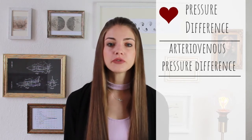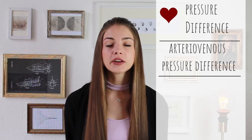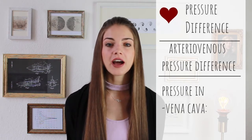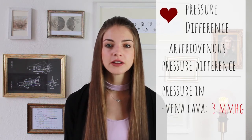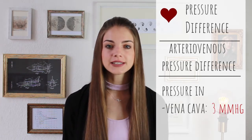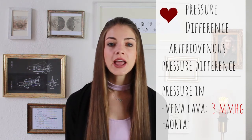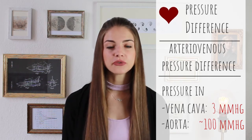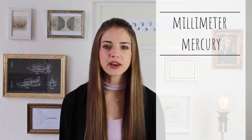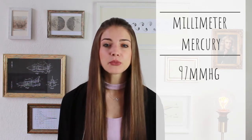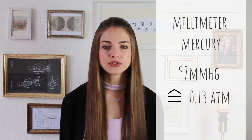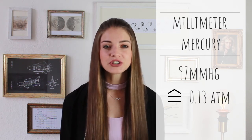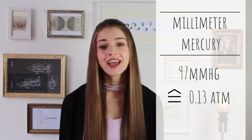The pressure before the heart — looking in the direction of blood flow — is the one in the blood vessel entering the heart, which is called the vena cava, and it is approximately 3 millimeters mercury. The pressure downstream of the heart, where the blood exits, is in the blood vessel called the aorta, and it is 100 millimeters mercury on average. That makes the arteriovenous pressure difference 97 millimeters mercury on average. Millimeter mercury is one of those really weird non-SI units, but it's widely used in the medical world. 97 of those millimeters mercury correspond to 0.13 atmosphere. That might not seem a lot, but that is the pressure difference that keeps us on our feet.